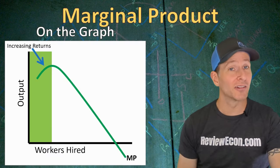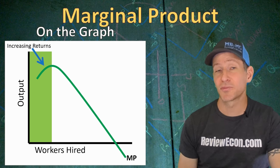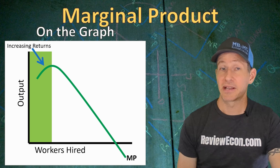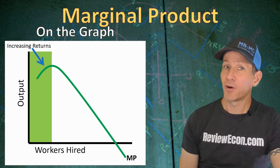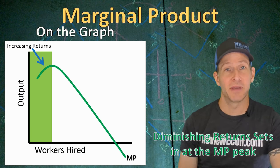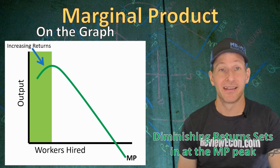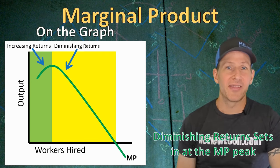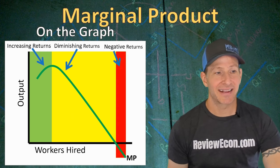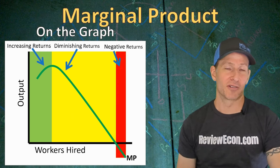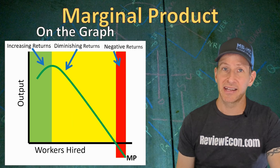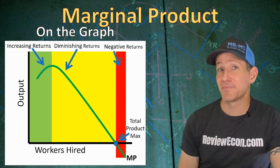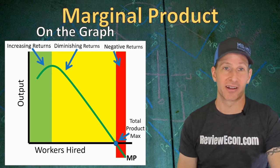When we put it on the graph, at low quantities of workers the marginal product curve will be upward sloping — that's increasing returns because marginal product is rising. When marginal product is at its peak, diminishing marginal returns sets in, and hiring more workers causes marginal product to fall. When that marginal product crosses the x-axis, that's where we have negative marginal returns — marginal product is negative and total product decreases. Total product is at its maximum where marginal product equals zero.